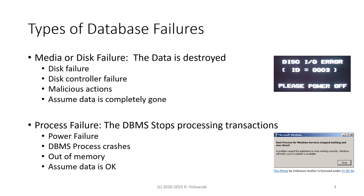There are two types of failures that we consider in database recovery. In the first type, we can call it a media or disk failure — this is where the data is destroyed. Something happens to the disk physically or electrically, or to the disk controller causing it to write bad data to the disk. It may also be a result of malicious action, such as someone deleting data. The bottom line is that for a media or disk failure, we assume the data is completely gone.